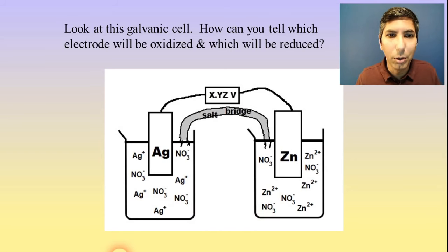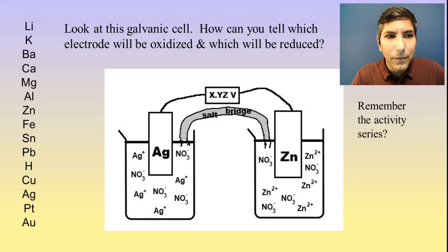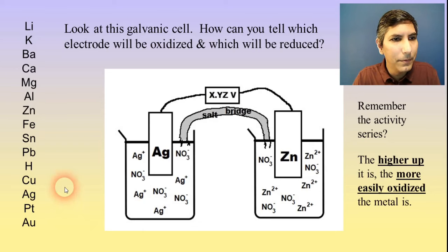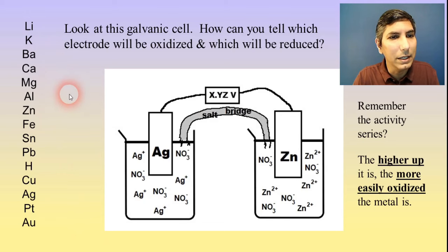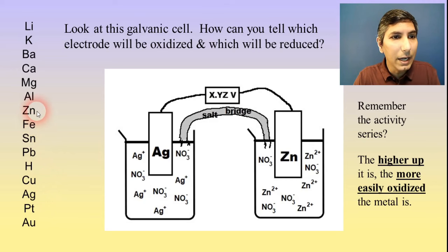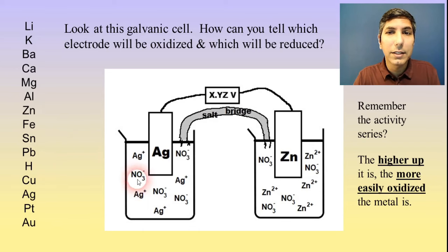Because in the last video, I just told you. You might remember that there's this thing called the activity series. We learned about this way back in Unit 4 when we discussed redox reactions, and the higher up a metal is on this activity series, the more easily oxidized that metal is. So in this example, we can compare silver and zinc, and we see that zinc is much higher on the activity series than silver is. So that tells us that zinc is going to be oxidized into zinc ions, and that means that the silver ions are going to have to be reduced into silver metal.